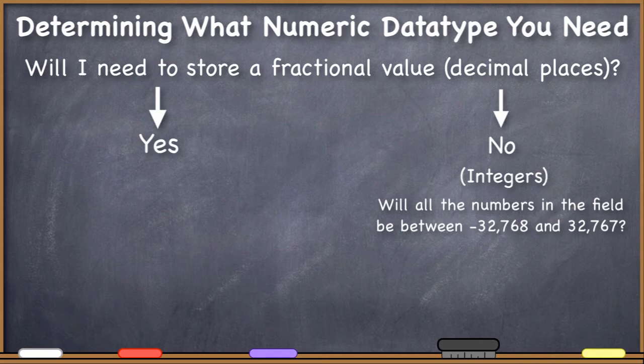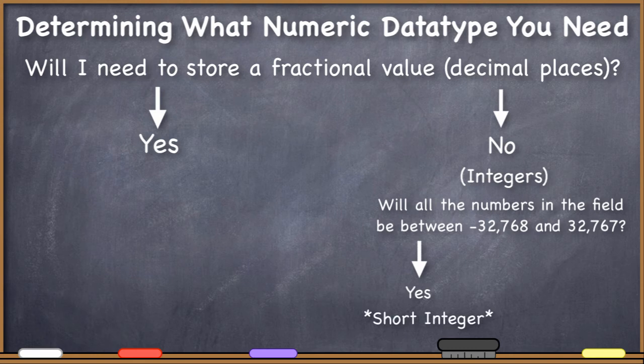The short integer data type allows a field to store whole numbers between negative 32,768 and 32,767. As long as all of the values that you need to store in the field are whole numbers between those two values, then the short integer data type is what you need.